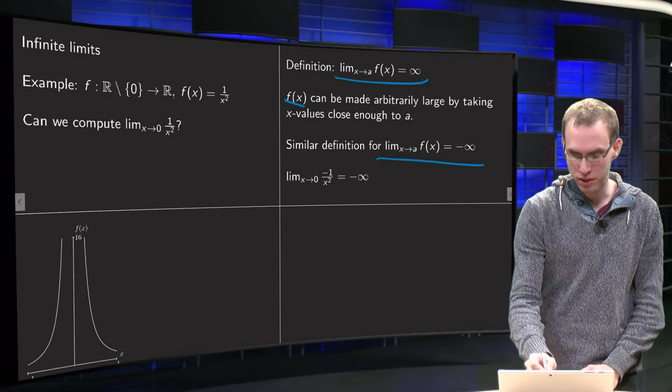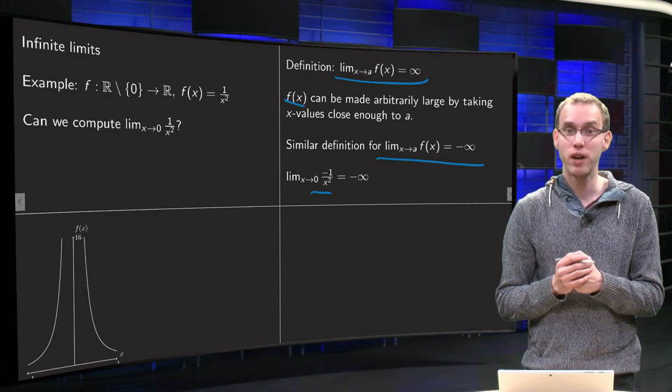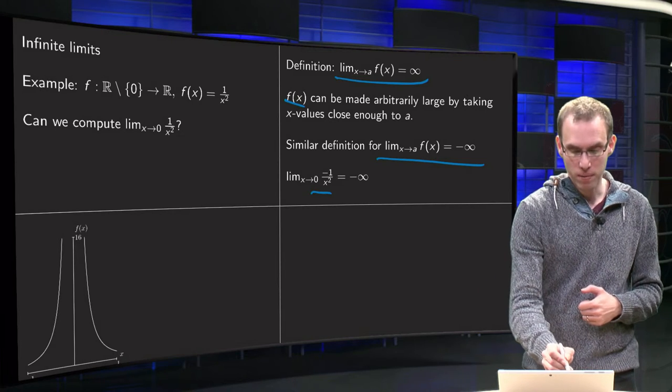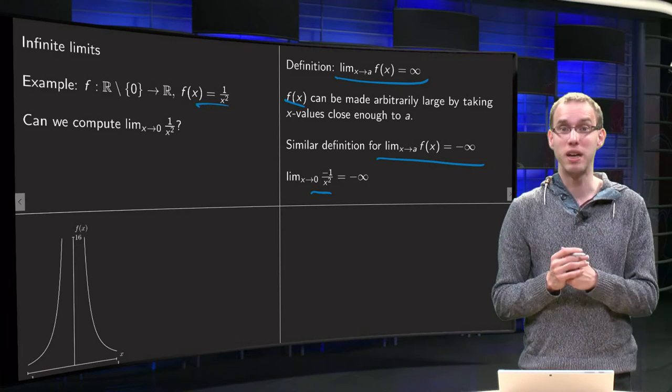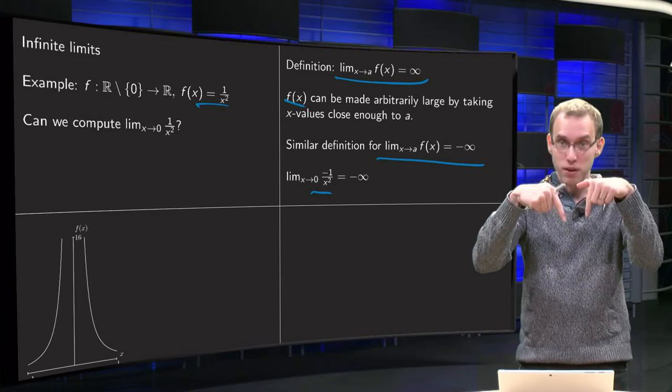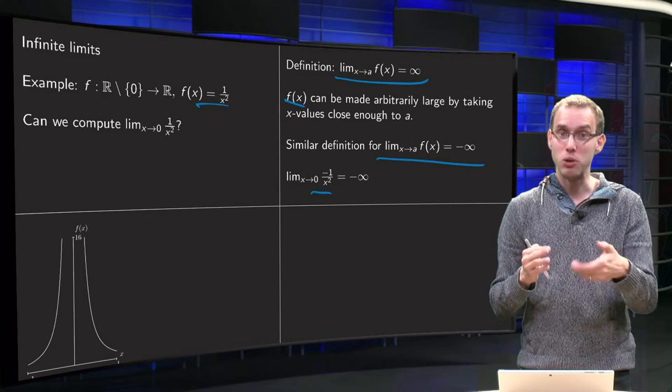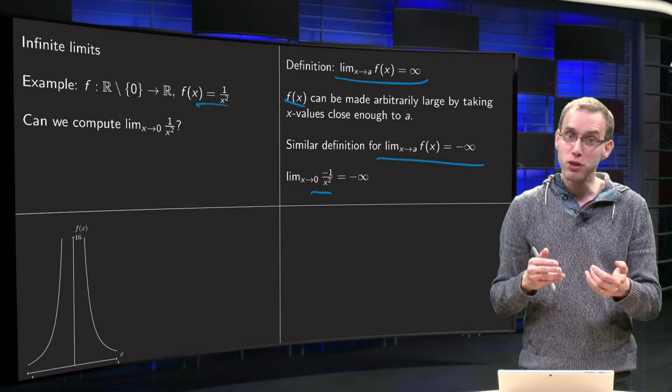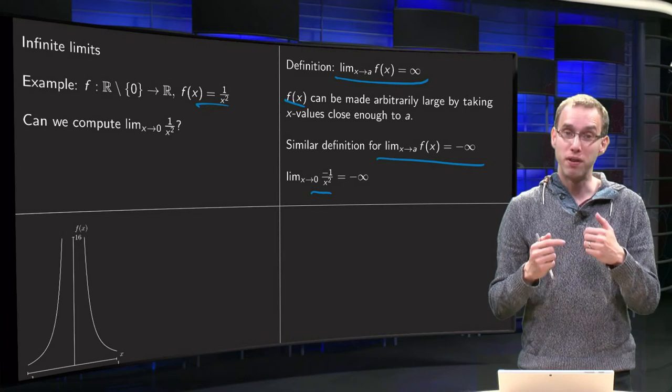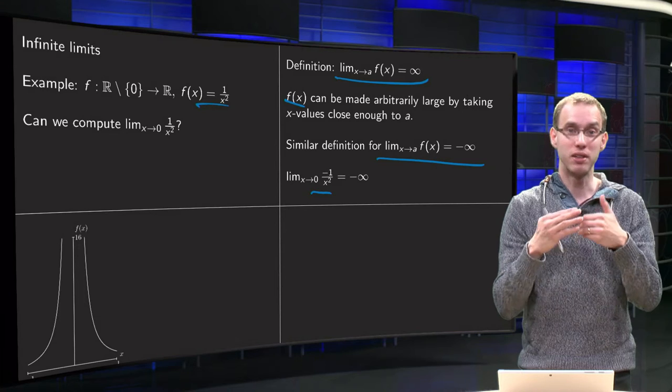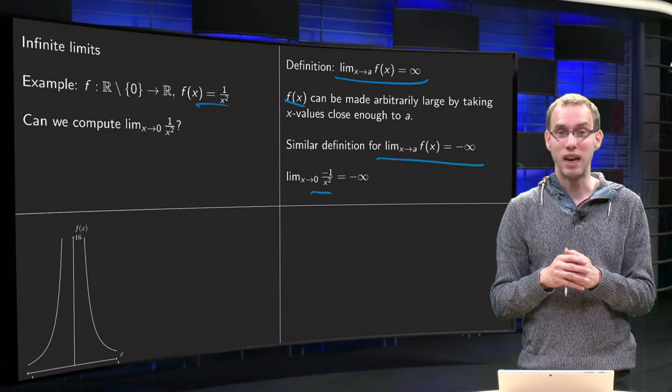For example, if we have the function f of x equals minus 1 over x squared, so the same one as this one but then with an additional minus sign, so it just flips in the x axis. If you take x closer and closer to 0, function values will be very large and negative, and you can get them as negative as you want.